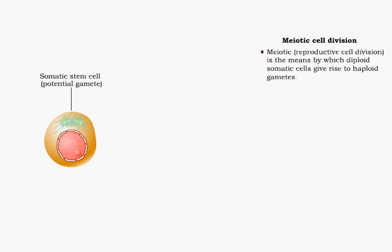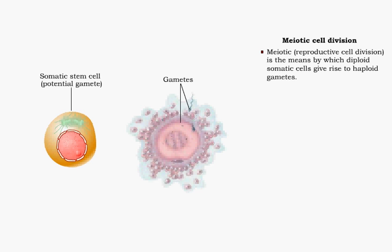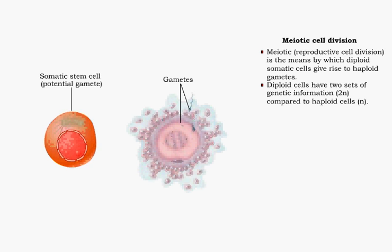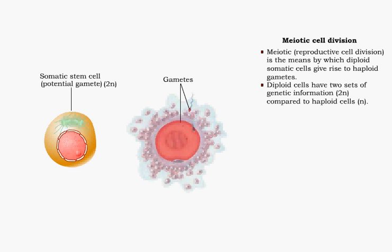Meiotic or reproductive cell division is the means by which diploid stem cells give rise to haploid gametes. Diploid cells, such as human somatic cells, have two sets of chromosomes — one set from the father and one set from the mother. Haploid cells, such as human gametes, have one set of chromosomes, with n representing the number of different chromosomes in the set.